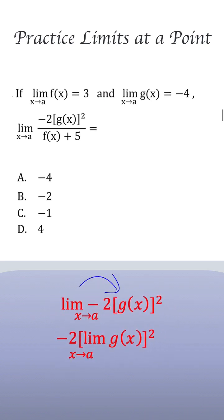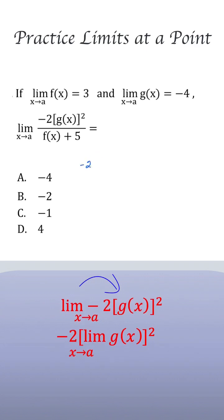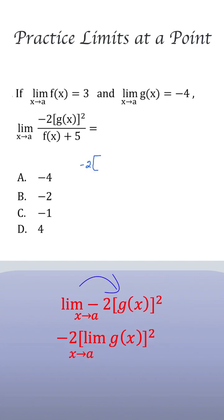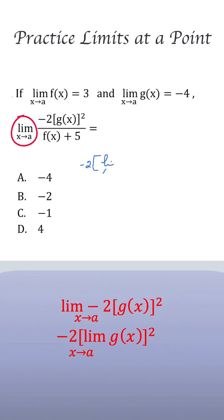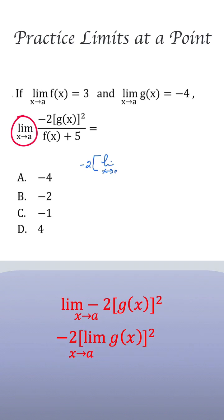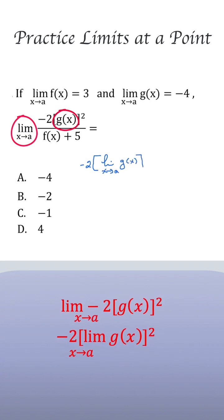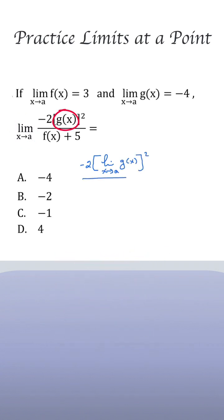So we can say it's equal to minus 2 times — we write the limit as x approaches a for g of x, and we put that squared over,